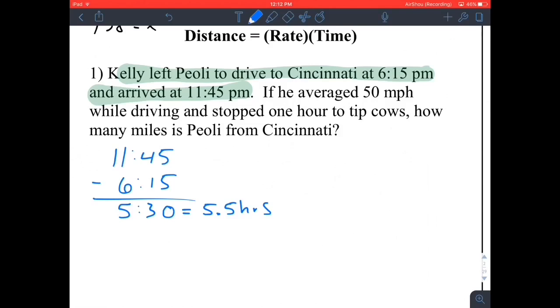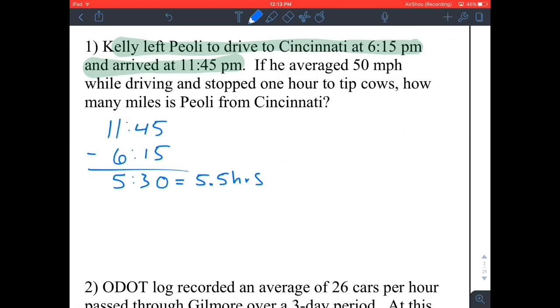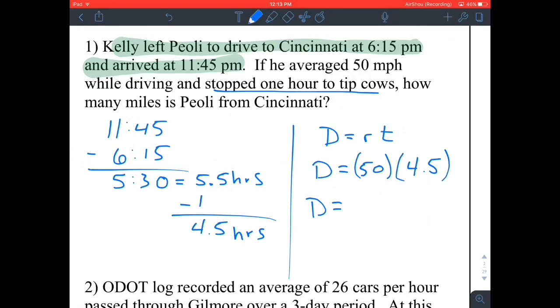He, Kelly's a boy, averaged 50 miles per hour while driving and stopped 1 hour to tip cows. How many miles is Peoli from Cincinnati? Well, the whole trip took 5.5 hours, but they stopped 1 hour for a little cow tipping. So that means the total time driven is actually 4.5 hours. Since distance equals rate times time, and our rate was 50 miles per hour and our time was 4.5 hours, that means our distance is going to be when you multiply those, 225 miles.